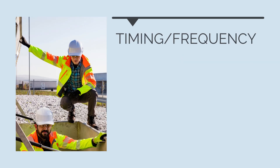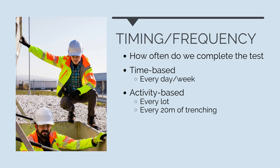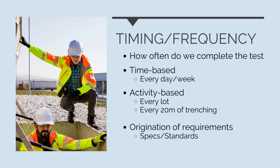Under the timing and frequency section, we'll nominate how regularly we'll conduct any test. This can either be time-based or activity-based. A time-based requirement would specify that we'll do the testing every week or month. Activity-based testing specifies that we'll do these tests at a given frequency of works, so for every lot or every 20 metres of trenching. The requirements for timing and frequency generally come from specifications or standards — for example, in the client's concrete work specifications, they may nominate that the owner's engineer must inspect the reinforcement before every concrete pour, so the frequency of this test would be per pour. Other times we may determine how often we want to do these checks — if we're having a lot of errors, issues, and defects, we may choose to complete tests more regularly.